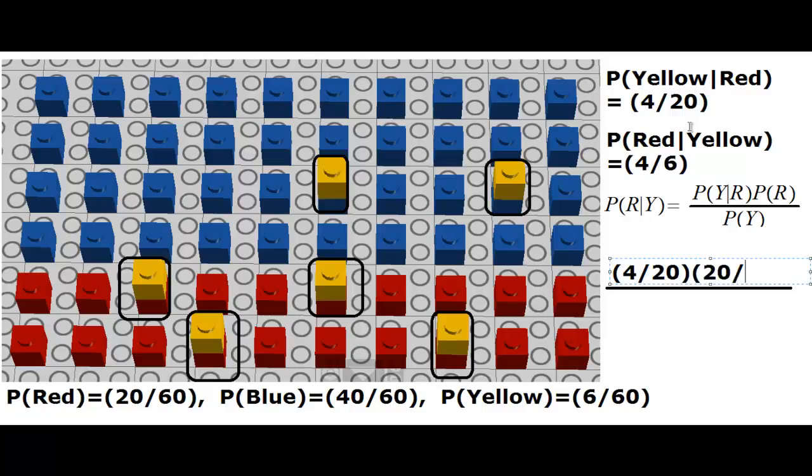We found that as 20 over 60. And then the probability of yellow is simply 6 divided by 60.